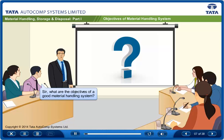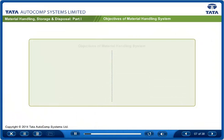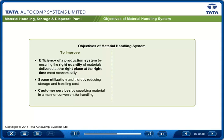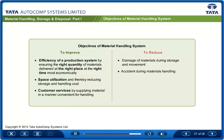What are the objectives of a good material handling system? A well-designed materials handling system attempts to achieve the following objectives: it improves efficiency of a production system by ensuring the right quantity of materials delivered at the right place at the right time most economically. It also achieves space utilization, thereby reducing storage and handling cost, and improves customer services by supplying material in a manner convenient for handling. It reduces damage of materials during storage and movement, and reduces accidents during materials handling.